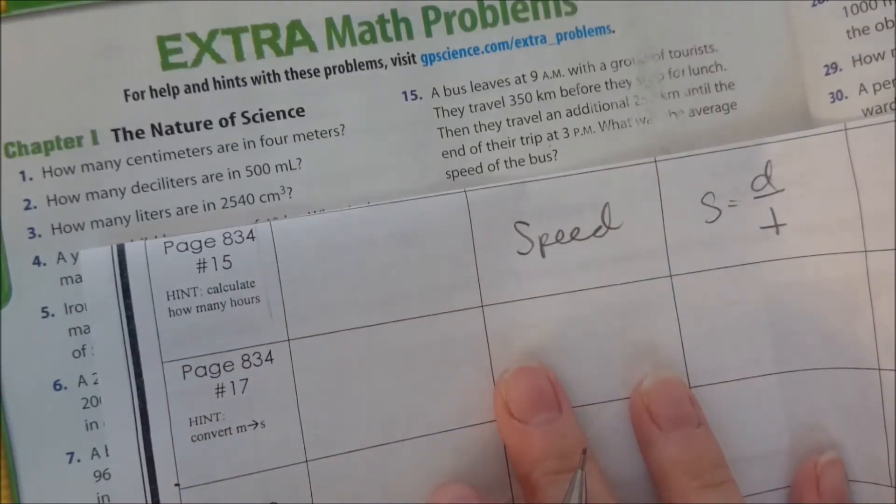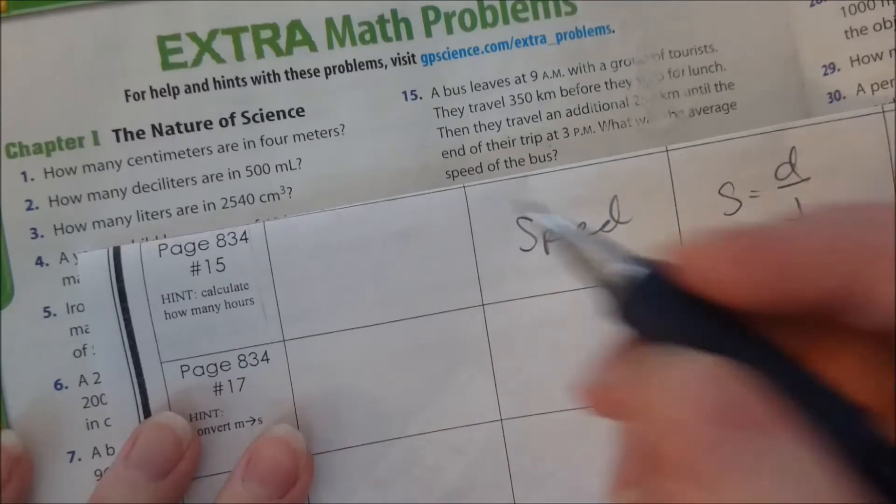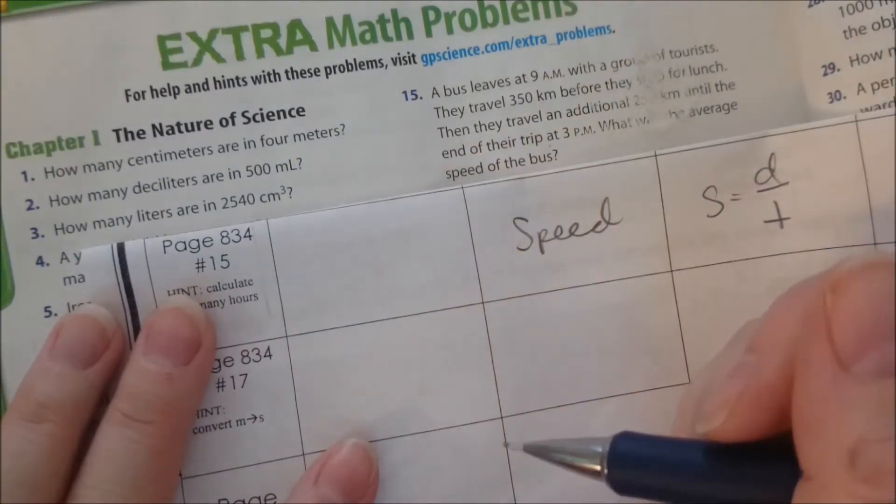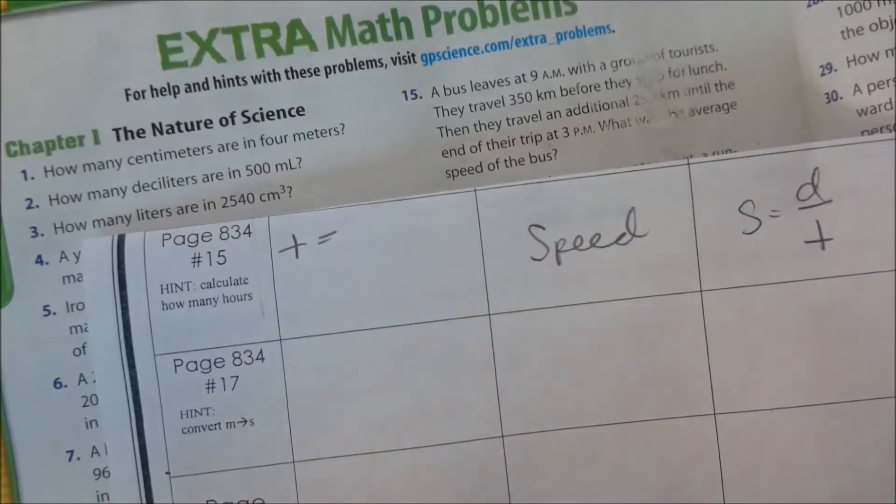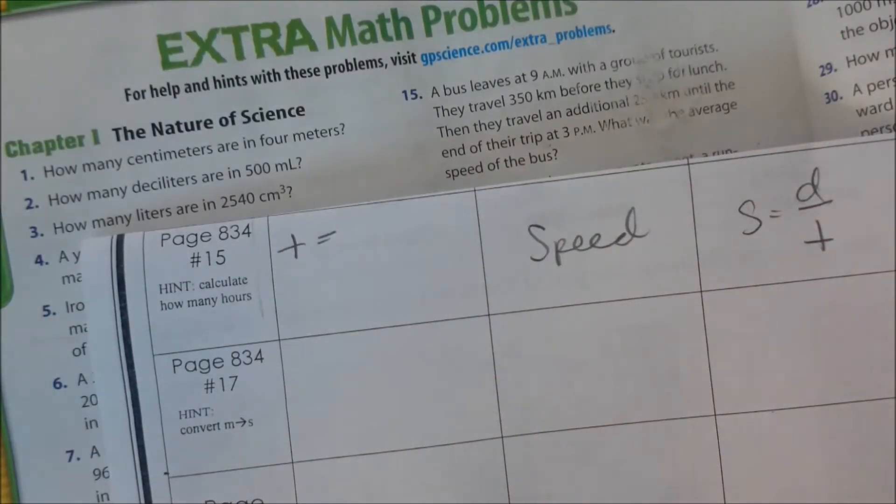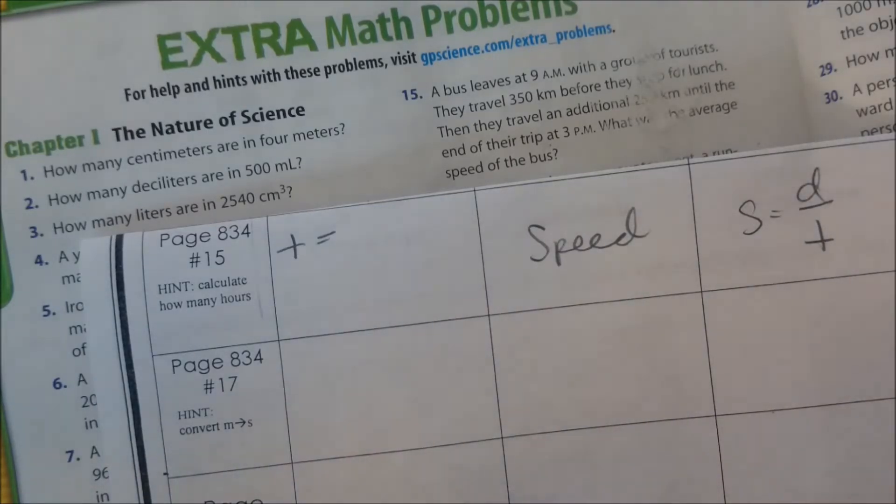So you just have to calculate a little bit here, but it's not very hard at all. A bus leaves at 9 a.m. and they stop at 3 p.m., so the time between 9 and 3—use your fingers if you need to count—9 to 10 is one hour, 10 to 11 is another hour, 11 to 12, 12 to 1, 1 to 2, 2 to 3. So that is six hours.